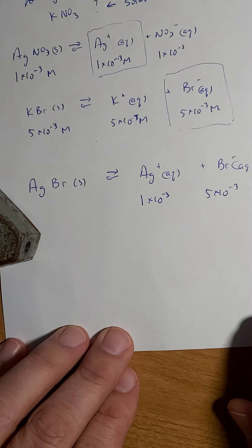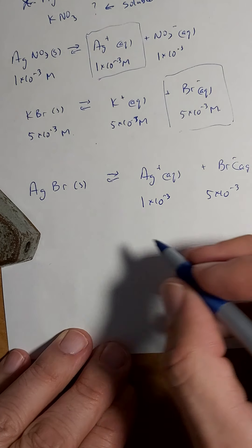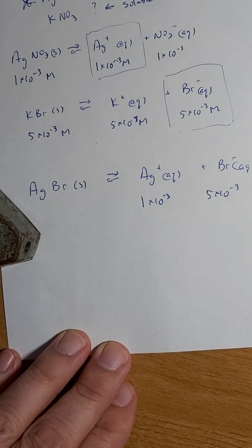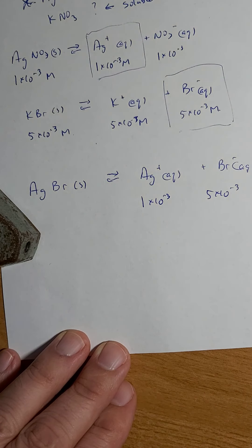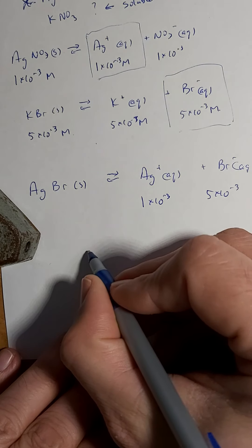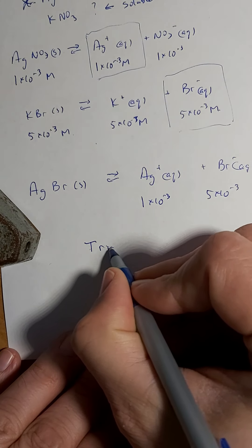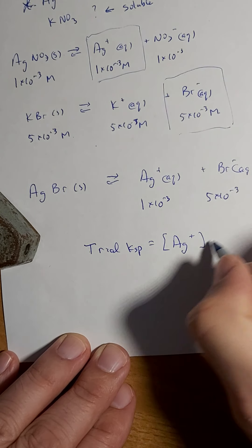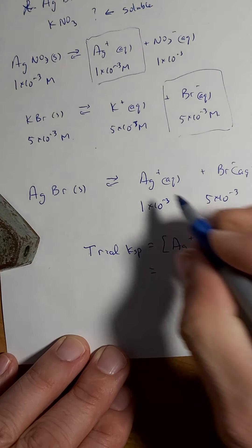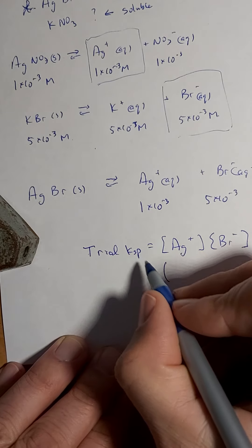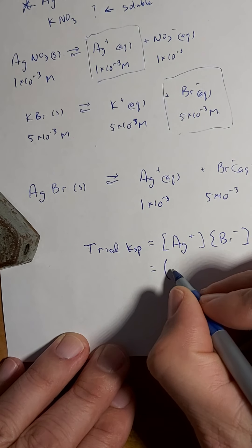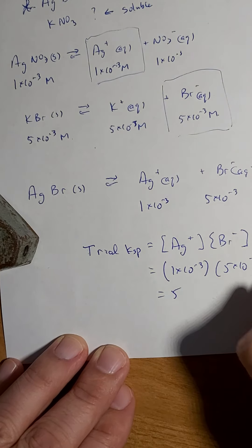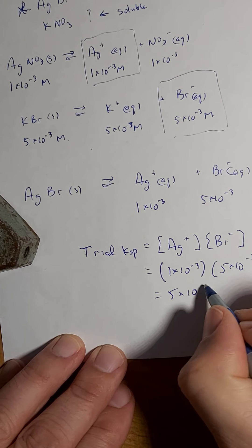So what I'm going to do is this next part is similar to which way will the equilibrium go to reach equilibrium. Will it shift left or right? And we figured out a reaction quotient Q. We do the exact same thing here. I was taught years ago to call this a trial Ksp equals Ag+ times Br-. And I'm going to plug in these values. So 1x10^-3 times 5x10^-3, I get 5x10^-6.